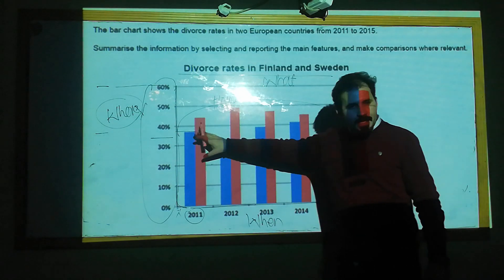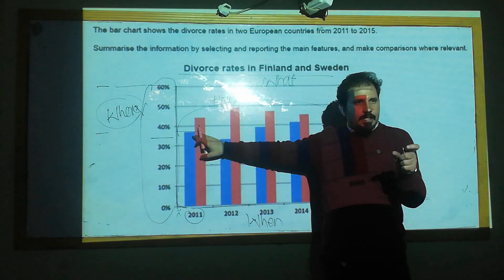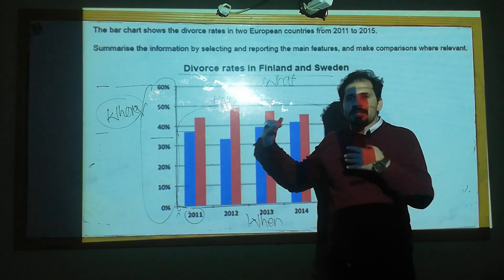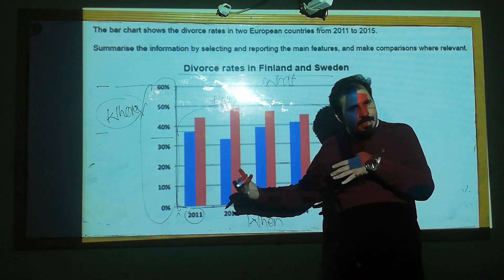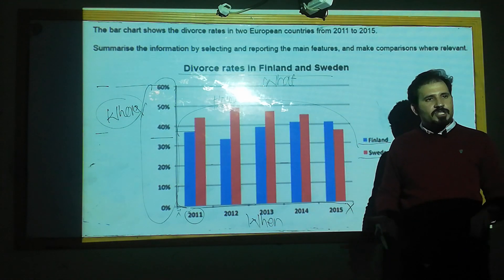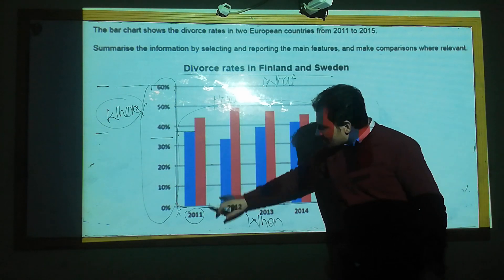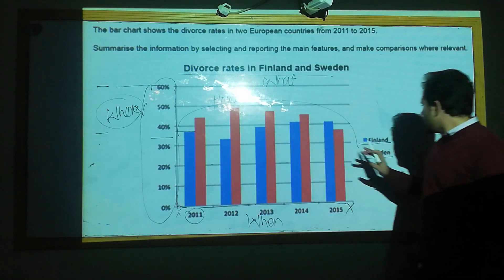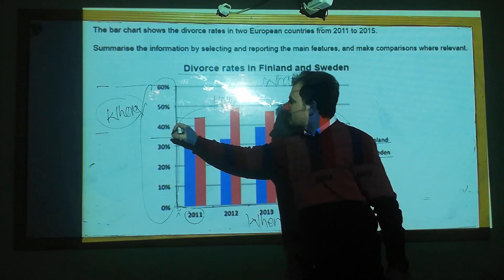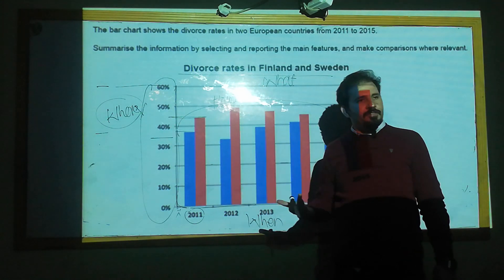The word 'almost' is very important here — nearly 40%, or 38%. We use approximation words because we do not know whether it's exactly 38 or 37. The examiner wants you to give approximation words. In the same year, 2011, the Sweden divorce rate started with zero and reaches to almost 45%.